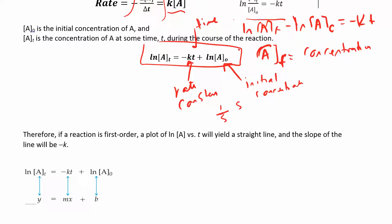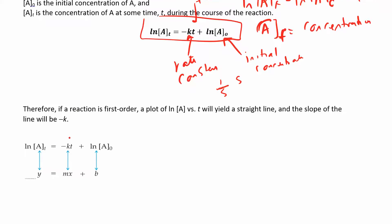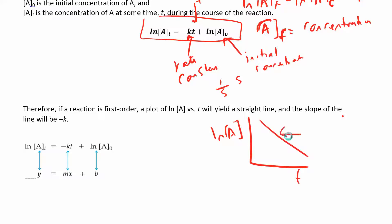The natural log is just the ln button on your calculator — let me know if you need help finding it. This is also a linear equation — the equation of a line: y = mx + b. You could graph this and get a straight line. On the y-axis you'd have ln[A], on the x-axis you'd have time, and your slope is negative K. That's how you can determine the rate constant: measure concentration at different times, take the natural log, plot it, and get a straight line for first-order kinetics.